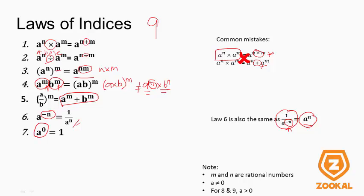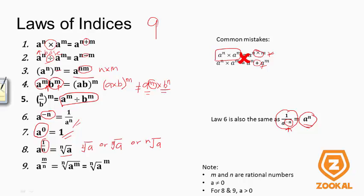Law 8: A to the power of 0 — we just have to memorize that it always equals 1. Law 9: A to the power of 1 over N — when the power is a fraction, it becomes a root. For example, 1 over 2 is square root, 1 over 3 is cube root. More generally, A to the power of M over N means the Nth root of A to the power of M. These 9 laws are important to remember so we can apply them correctly.